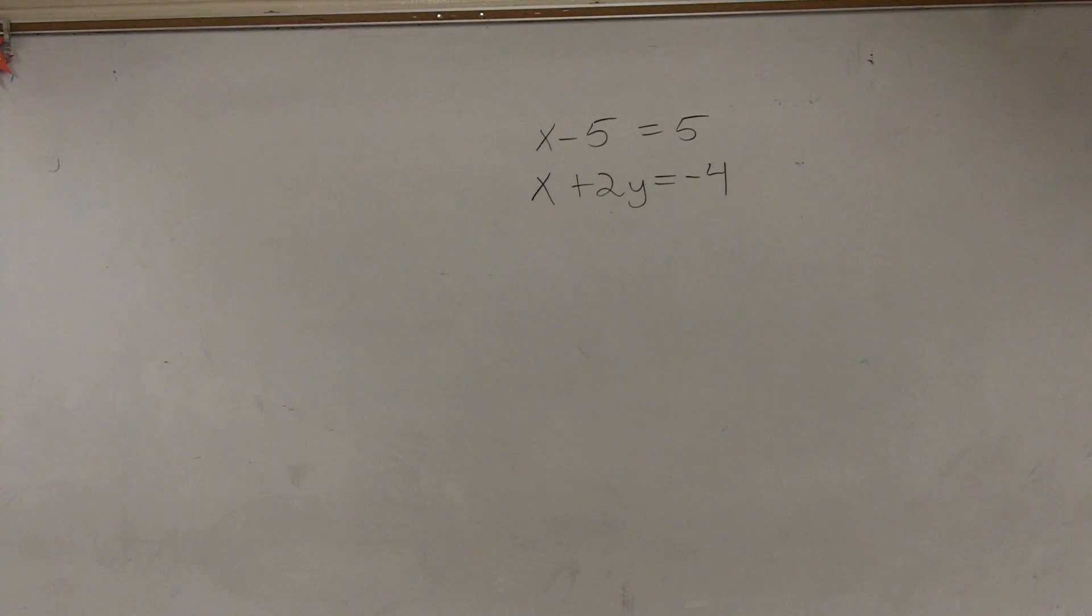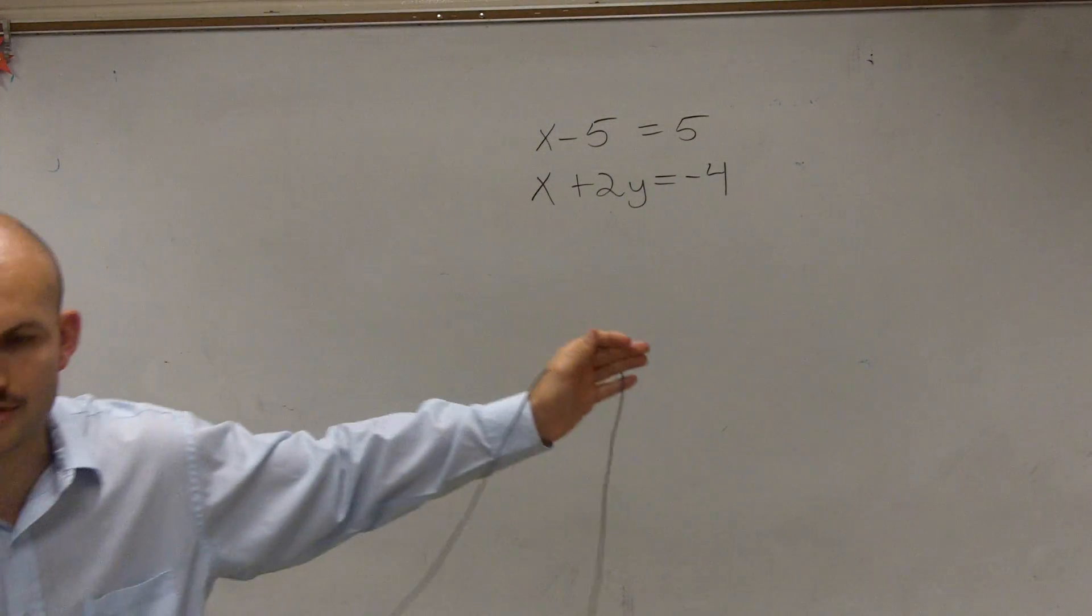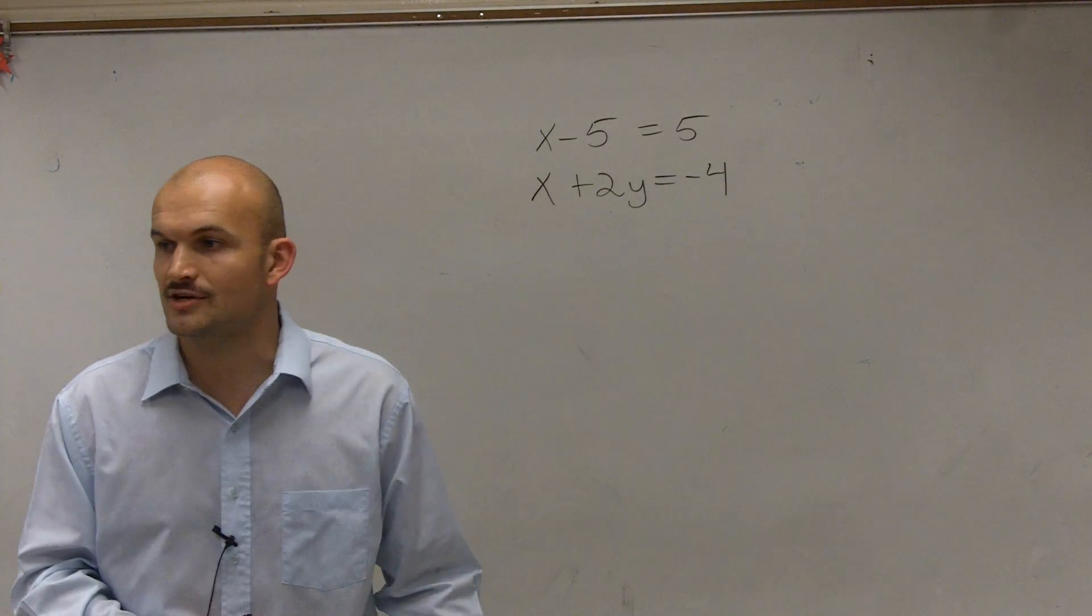When doing a problem like this, what we want to do is make sure we graph. I told you how to graph - the best way I'd like you to graph this is to use the slope-intercept form. It's just going to be the easiest way for us to find the intersection points.